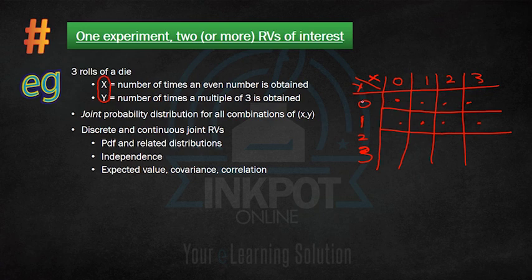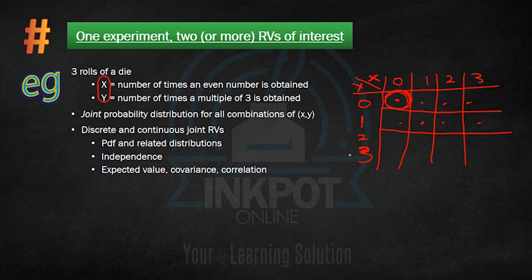We want to know: what is the probability that we neither get an even number nor a multiple of three in any of the rolls? That will be the probability in one particular cell of the table. Further, what would be the probability that we get an even number on all three rolls and also a multiple of three in all three rolls? That is given by another cell, and so on.